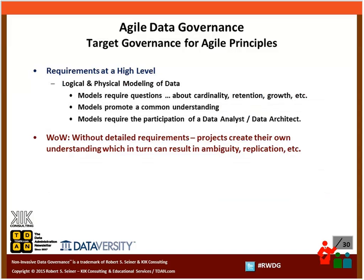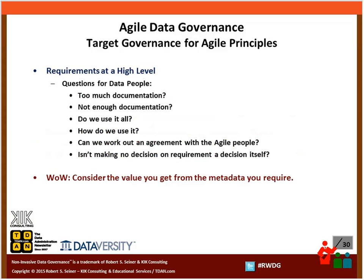If we can find a way to deliver models quicker, it's going to be more effective for agile projects. Without detailed requirements, projects often create their own understanding of the data, which can result in ambiguity and replication — and isn't that a problem we've had all along with the waterfall approach? If we're trying to get away from that but also deliver projects quickly, we want to make sure we have at least a level of detailed requirements to eliminate the ambiguity and replication in projects.